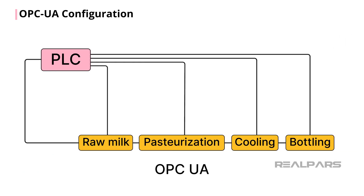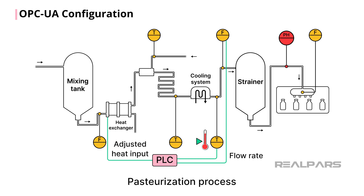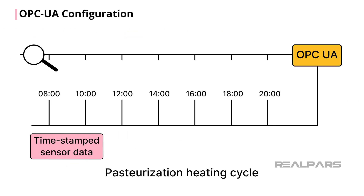OPC UA plays a key role in the adaptive feedback loops integrated into programmable logic controllers. These advanced control schemes can monitor the milk product at every stage of production, and initiate corrective actions before quality parameters are violated. For instance, if the temperature at the outlet of the HTST drifts, the system can use the milk flow rate to calculate the appropriate adjustment to the heat exchanger's heat input.